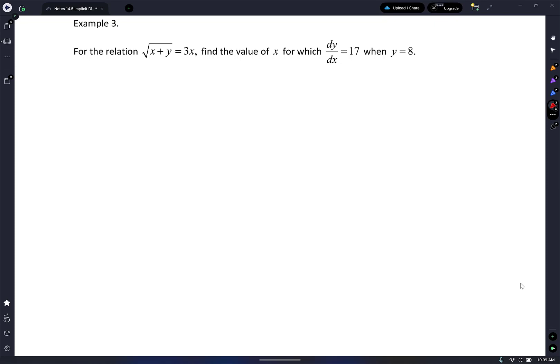Here we go. For the relation, square root of (x + y) equals 3x, find the value of x for which dy/dx equals 17 when y equals 8. This starts turning into more algebra. First, let's take a derivative. This is chain rule all over the place. I'm going to rewrite it: (x + y)^(1/2) equals 3x. I move the half to the front, leave the inside alone, put what power? Negative one-half. Am I done? No. Times the derivative of the inside. What's the derivative of x? 1. Plus what's the derivative of y? dy/dx. Equals 3.